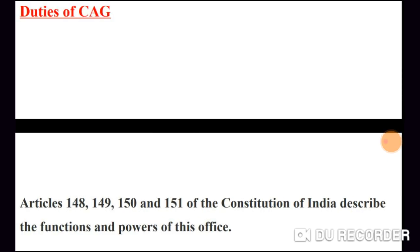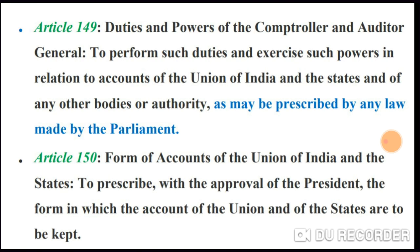There are some duties defined under Articles 148, 149, 150, and 151 of the Constitution of India, which define the powers and functions of the CAG. Article 149 deals with the duties and powers of the Comptroller and Auditor General. The main duty is to exercise such powers in relation to the accounts of the Union of India and states and of any body or authority as may be prescribed by any law made by Parliament — covering auditing of the Union of India, states, and any other body or authority.